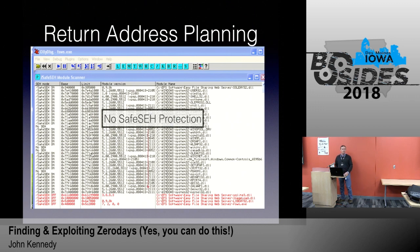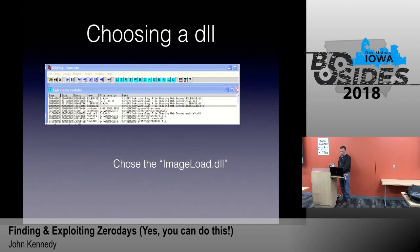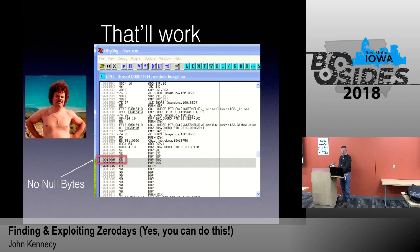The next thing I did, although this was not required for a Windows XP machine, I wanted to find out which of the DLLs associated with the app had safe SEH protection. The ones in red associated with the application itself do not. So I would choose one of those DLLs for my next opcode. I chose the image load DLL and began to search it for a pop-pop-ret sequence, which is what you do for a structured exception handler. And found one that worked because it did not have any null bytes in it. That is the one I chose for my return address.